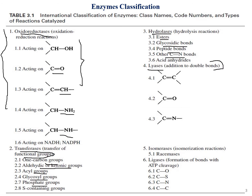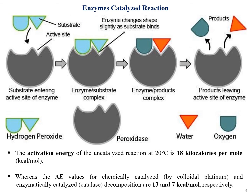Fourth, lyases involve addition to double bonds — C=C, C=O, and C=N bonds. Fifth, isomerases carry out isomerization reactions and can be classified as racemases. Sixth, ligases involve the joining or ligation of many ends and also help in bond formation with ATP cleavage, including C-O, C-S, C-N, and C-C bonds. These are the six classification types based on the names and types of reactions catalyzed.